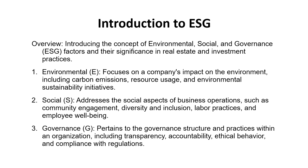The Environmental aspect (E in ESG) refers to a company's impact on the environment and includes factors such as carbon emissions, energy efficiency, water usage and efforts towards environmental sustainability and conservation. The Social aspect (S in ESG) focuses on how a company interacts with and impacts society — it includes considerations such as community engagement, diversity and inclusion in the workforce, labour practices and initiatives to promote employee well-being and social equity. Governance (G in ESG) refers to the governance structure and practices within an organization, including transparency in reporting, accountability of management, ethical behaviour and decision-making, and adherence to regulatory requirements and industry standards.